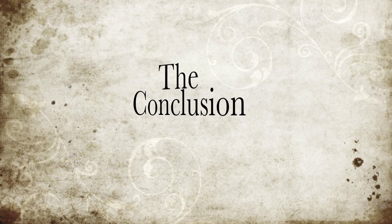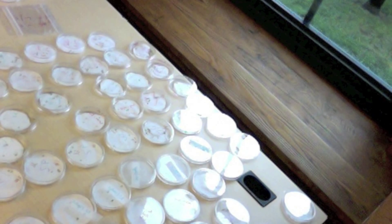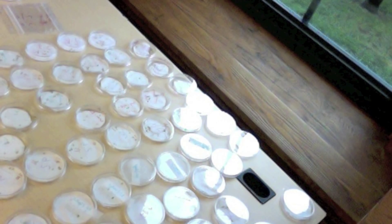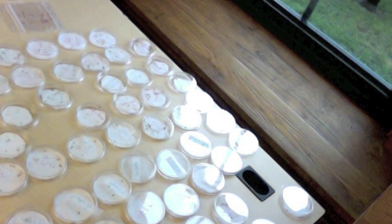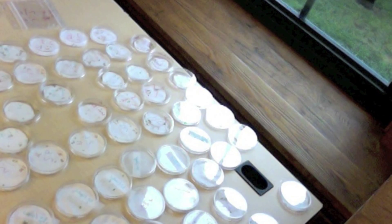In conclusion, throughout our experiment, we learned acid rain prohibits seed growth in our environment. Our hypothesis, the more acidic the environment surrounding the seeds, the less conducive the growing environment would become, was fairly correct in this case.